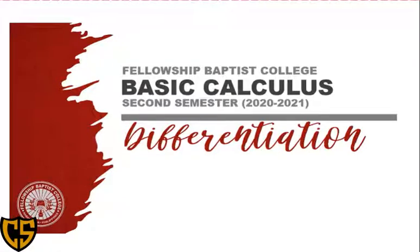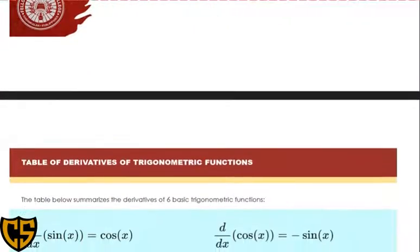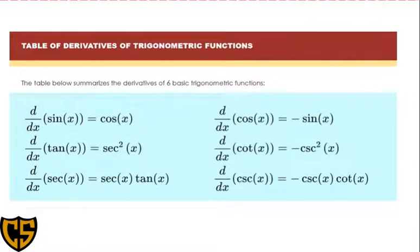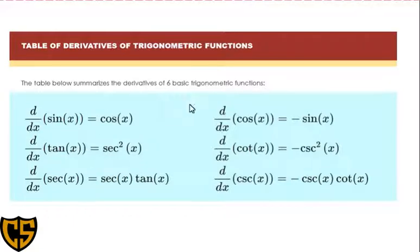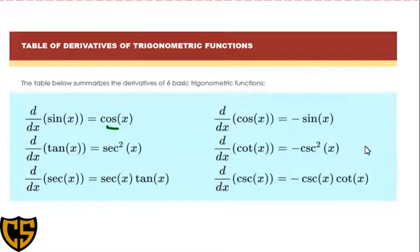For the first discussion, we are going to cover the derivatives of trigonometric functions. I have presented here a table of the derivatives of the six basic trigonometric functions: sine, cosine, tangent, cotangent, secant, and cosecant. The derivative of sine x is cosine x. Derivative of cosine x is negative sine x. Derivative of tangent x is secant squared x. Derivative of cotangent x is negative cosecant squared x. Derivative of secant x is secant x times tangent x. And derivative of cosecant x is negative cosecant x times tangent x.